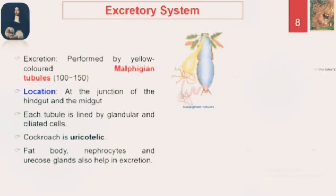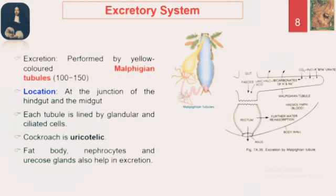Now let us look at the excretory system. Cockroach is uricotelic — it has to conserve water and excretes uric acid. Excretion is performed by yellow-colored Malpighian tubules. Looking at the digestive system, we have seen at the junction of mid-gut and hindgut there were Malpighian tubules. Each tubule is lined by glandular ciliated cells. Fat body, nephrocytes, and uricose glands also help in excretion. In the tubule there is excretion of bicarbonates along with water, and some substrate is reabsorbed. There are around 100 to 150 tubules present in cockroach.